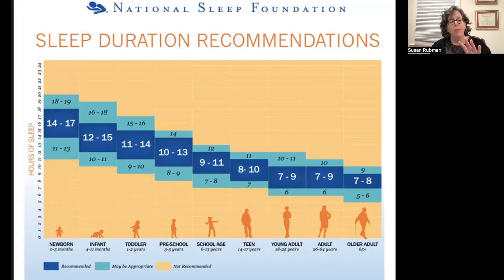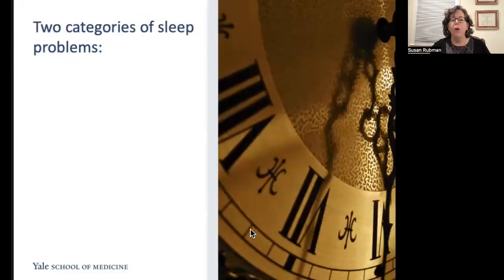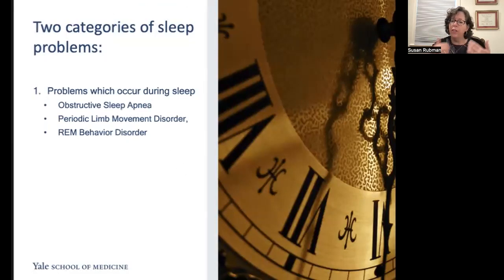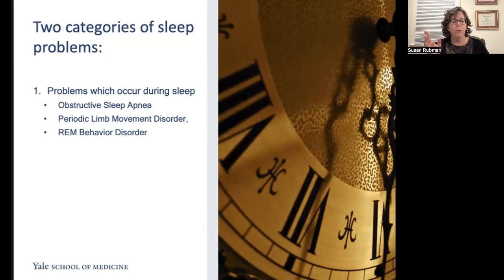We can divide problems with sleep into two broad categories. The first is problems which occur during sleep. Those include obstructive sleep apnea — pauses in breathing of 10 seconds or longer during sleep — which are associated with a drop in oxygen saturation. These pauses in breathing are often associated with little tiny wake-ups, and for clinically significant obstructive sleep apnea, they are associated with significant health risks.